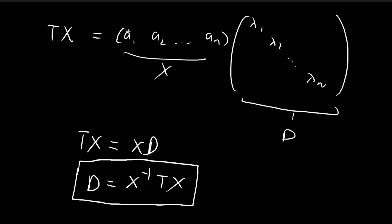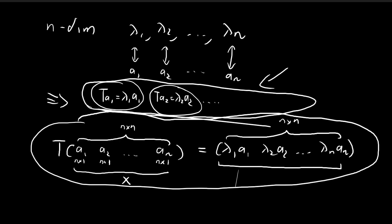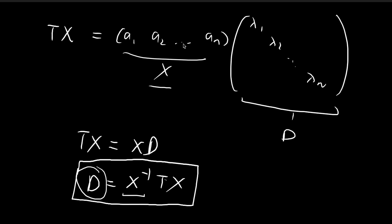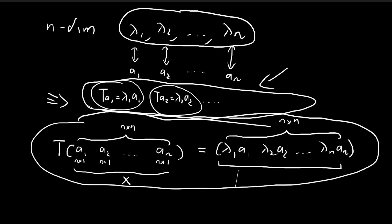X is a matrix where all the columns are the corresponding eigenvectors. Using this matrix, you take the inverse, multiply it to your linear transformation matrix T, then multiply by X again, and you get your diagonal matrix D. This requires the inverse of X to exist, which is only possible if all n eigenvalues are unique. If there are repeated solutions — for example λ₁ = λ₂, called a degenerate solution — it will not be possible to diagonalize your matrix.